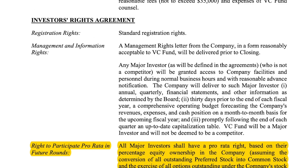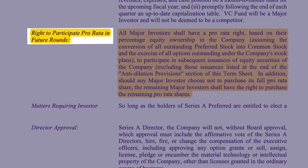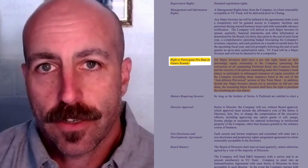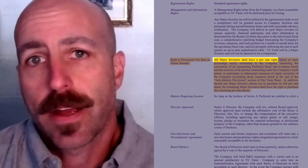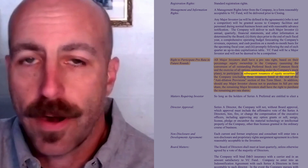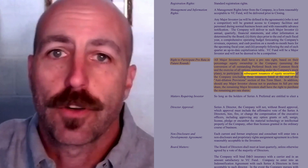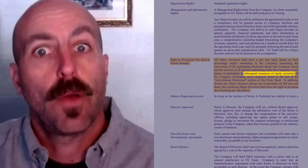The second key right for major investors is participation rights. Having raised money on SAFEs, a lot of you are probably familiar with pro-rata rights — many of your angels and seed investors ask for them. All major investors under your Investor Rights Agreement are going to get these pro-rata rights in every future round, not just this one. Your lead investor, who's delivering the term sheet, is going to insist on both information and pro-rata rights.